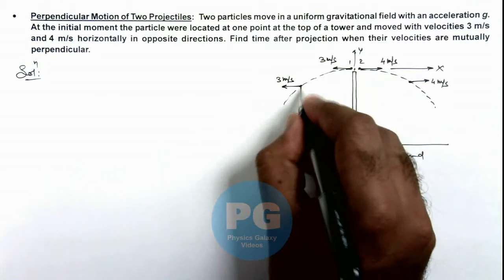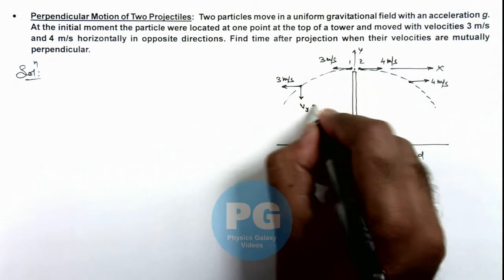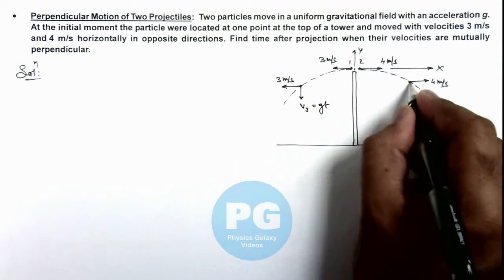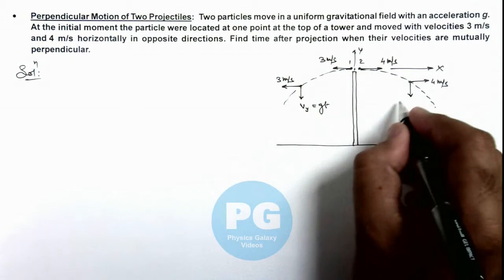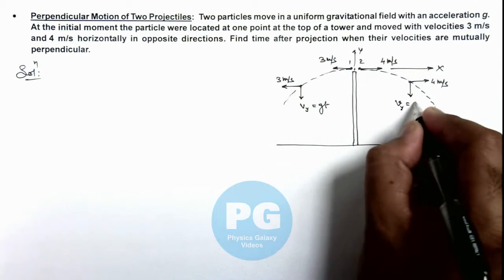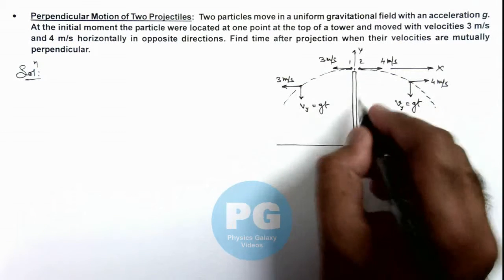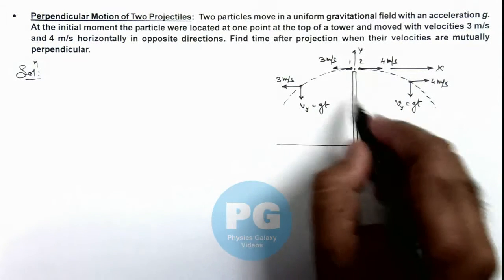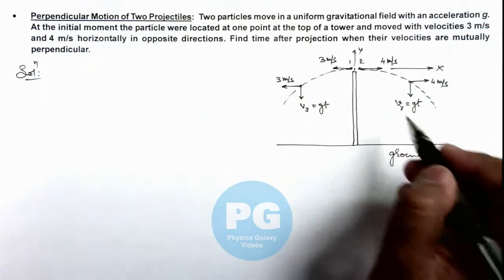And in downward direction their velocity vy we can write as gt, because at the initial moment of time their velocity component in y direction was zero, so u plus gt will be only gt for both of these particles.